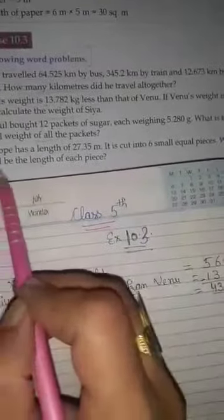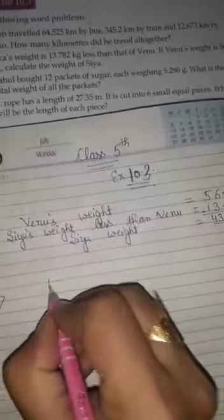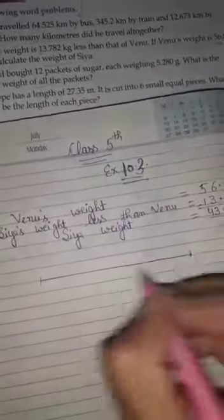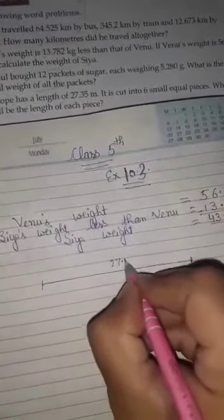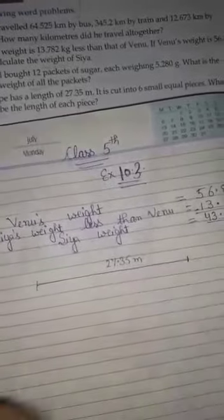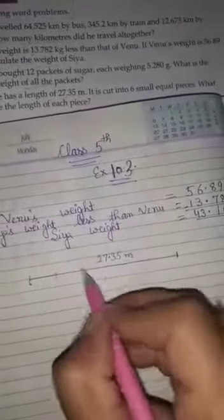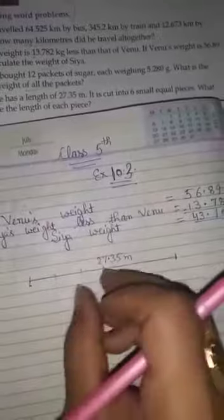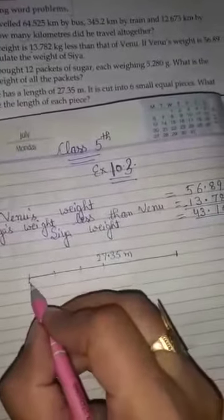For example, the rope given has a length of 27.35 meters. We want to cut into six small equal pieces. Then we want to find the length of each piece.